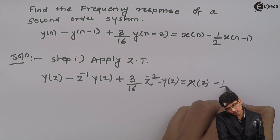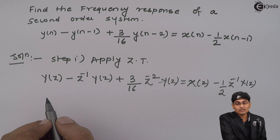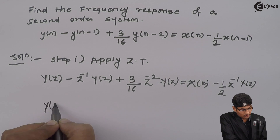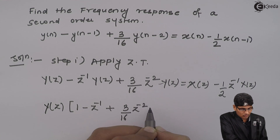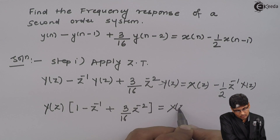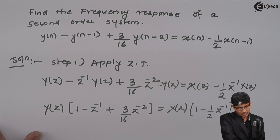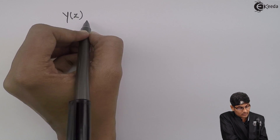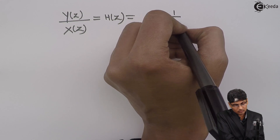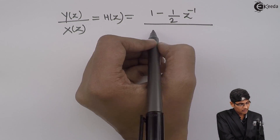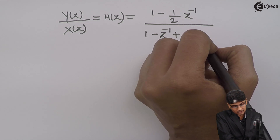...X(z) minus (1/2)·z^(-1)·X(z). Pulling out Y(z) and X(z) common and solving for H(z), we get Y(z)·[1 - z^(-1) + (3/16)z^(-2)] = X(z)·[1 - (1/2)z^(-1)]. Therefore H(z) = Y(z)/X(z) = [1 - (1/2)z^(-1)] / [1 - z^(-1) + (3/16)z^(-2)].